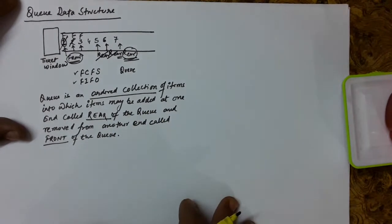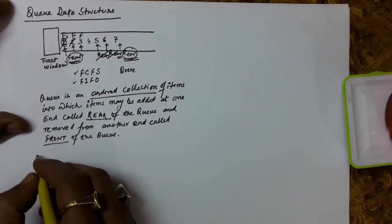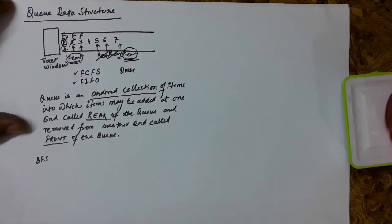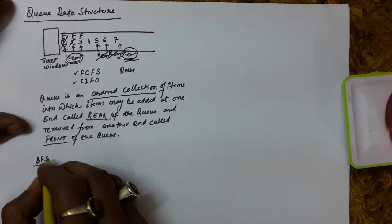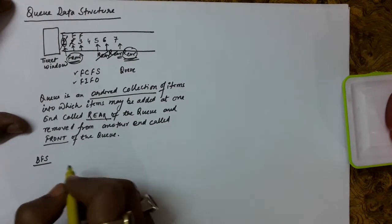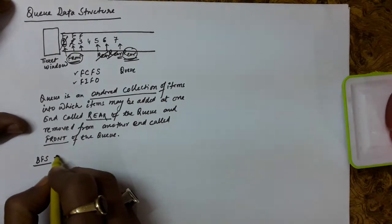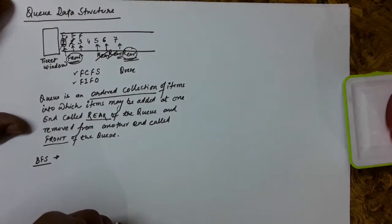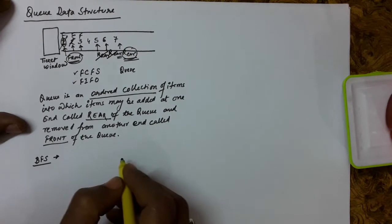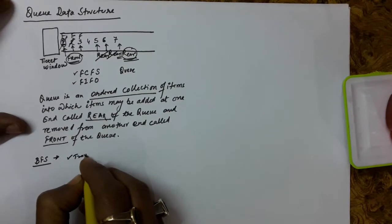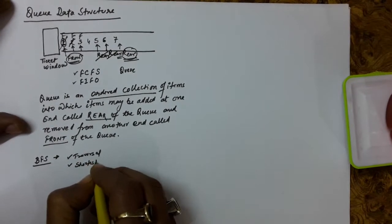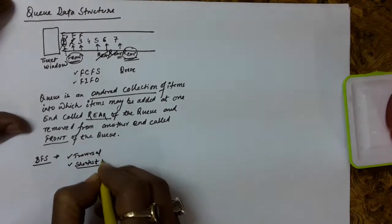You can take some examples of the queue data structure. For example, when you perform breadth-first search in a graph, the nodes explored from one node are added into the queue. The order in which nodes are explored is kept in the queue, so BFS uses the queue data structure. BFS is a graph traversal technique and it also gives us the shortest path when every edge has cost one.